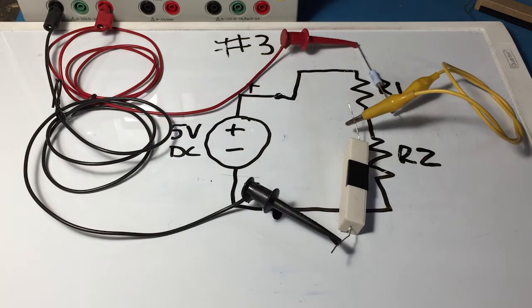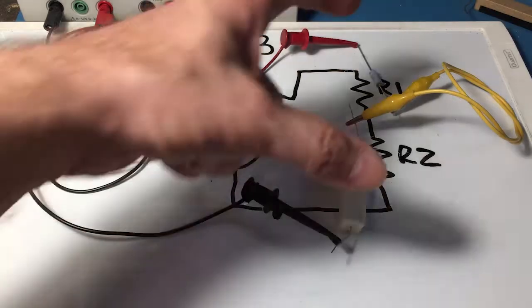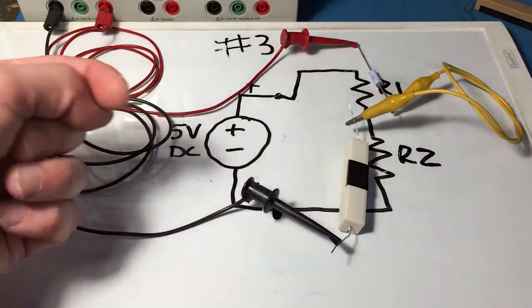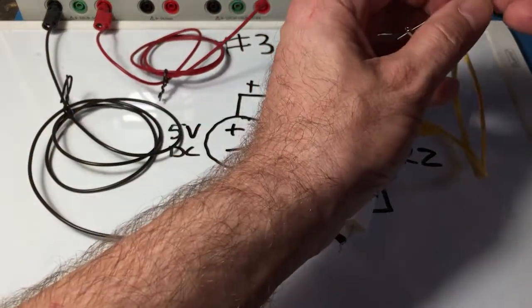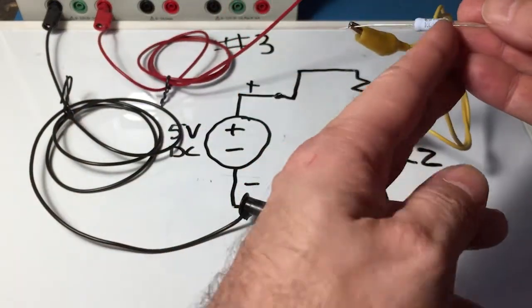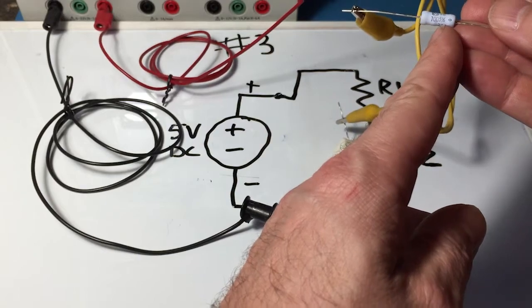And for this one we want you to figure out the values of R1 and R2. If we didn't tell you one of those you couldn't do that. You could figure out the equivalent of the pair of them but you couldn't figure out just one. So we're going to tell you that R1 is a 10 ohm resistor.